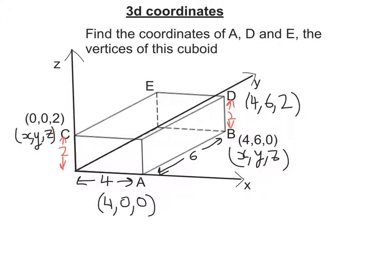Now lastly, E. Well E is on the same level as C and D, so I think we can pretty confidently put a 2 in there.